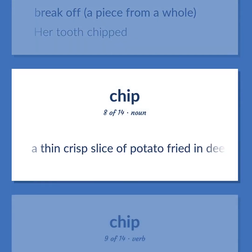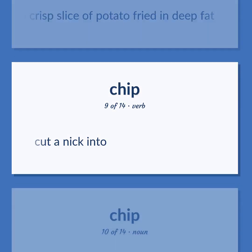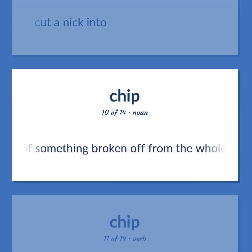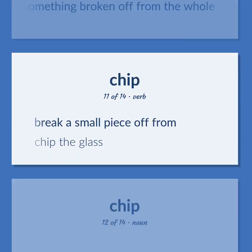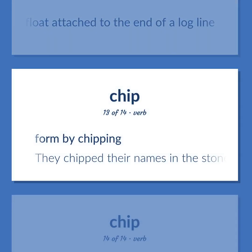Chip: A thin crisp slice of potato fried in deep fat. Cut a nick into. A small fragment of something broken off from the whole. Break a small piece off from — chip the glass. A triangular wooden float attached to the end of a log line. Form by chipping — they chipped their names in the stone.